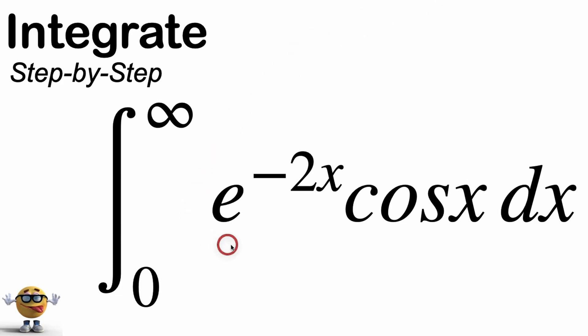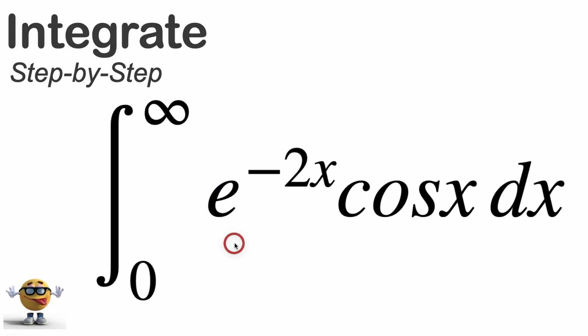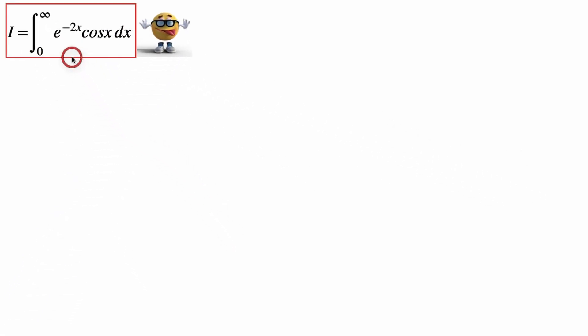My friends, we're going to evaluate the integral of e to the negative 2x cos x from zero to infinity, and this is a sneaky integral to do. It's not too bad, but we're going to do it using integration by parts, and this is the most popular way.